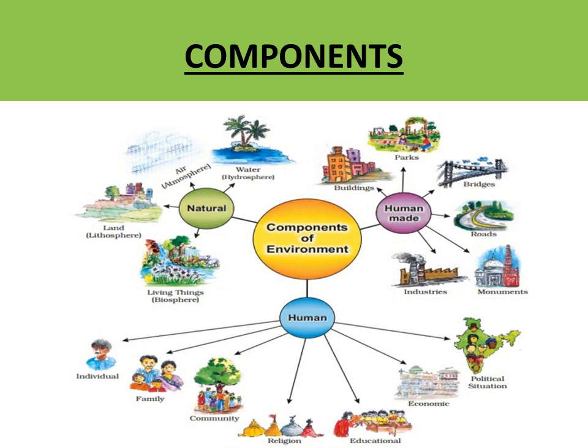There are three components of environment as seen in this diagram. The first is natural components — air, water, land, and living things. The second is human components — from individual to family, from family to community, from community to religion, then to educational institutions, economic institutions, and political institutions. All these are human components.